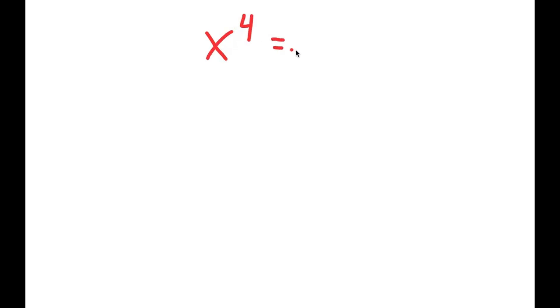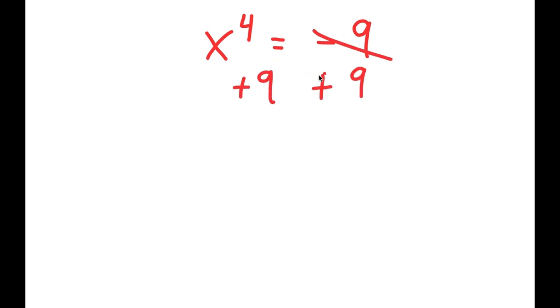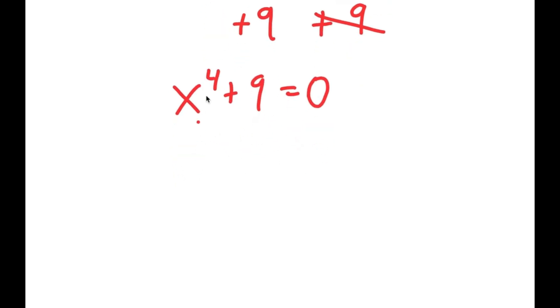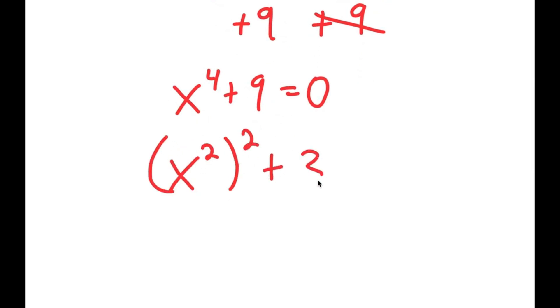In this video, I'm going to be solving the equation x to the power of 4 is equal to negative 9. First, I'll add 9 on both sides so I get x to the power of 4 plus 9 equals 0. From here, I can rewrite x to the power of 4 as x squared to the power of 2, and rewrite 9 as 3 squared.